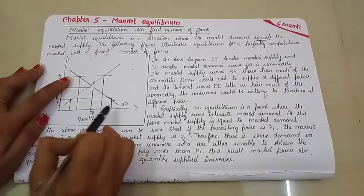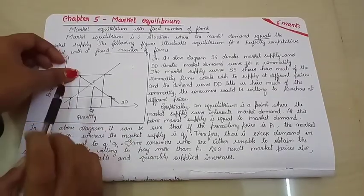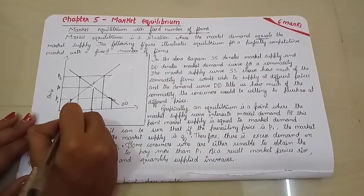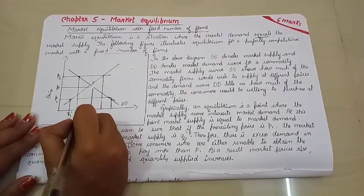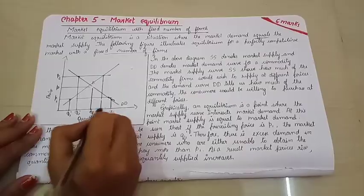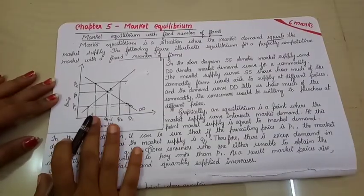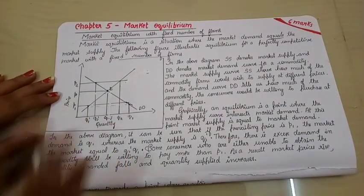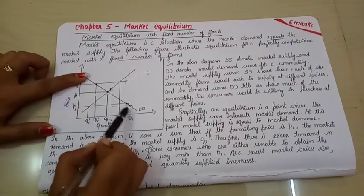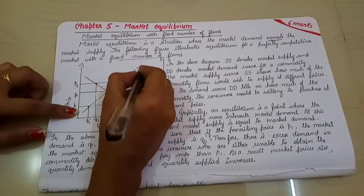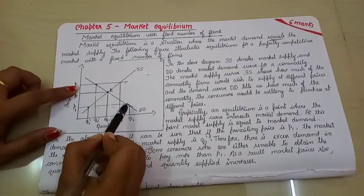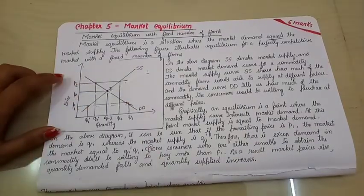The equilibrium is the intersection point of the demand and supply curve. This is the equilibrium. Next, what we have done is we have just joined these intersection points. Now, we shall name all of these. We will name this as Q1 dash, this one as Q2 dash, this will be Q2 and this one will be Q1.